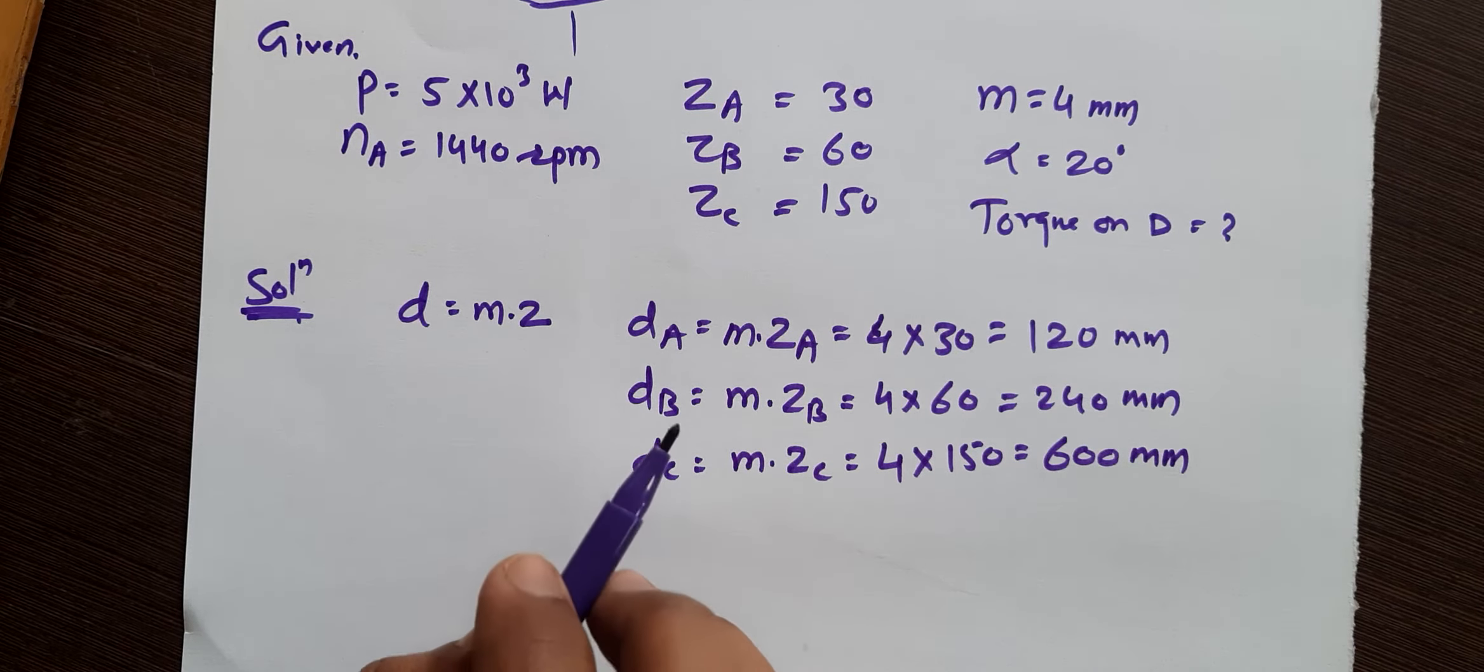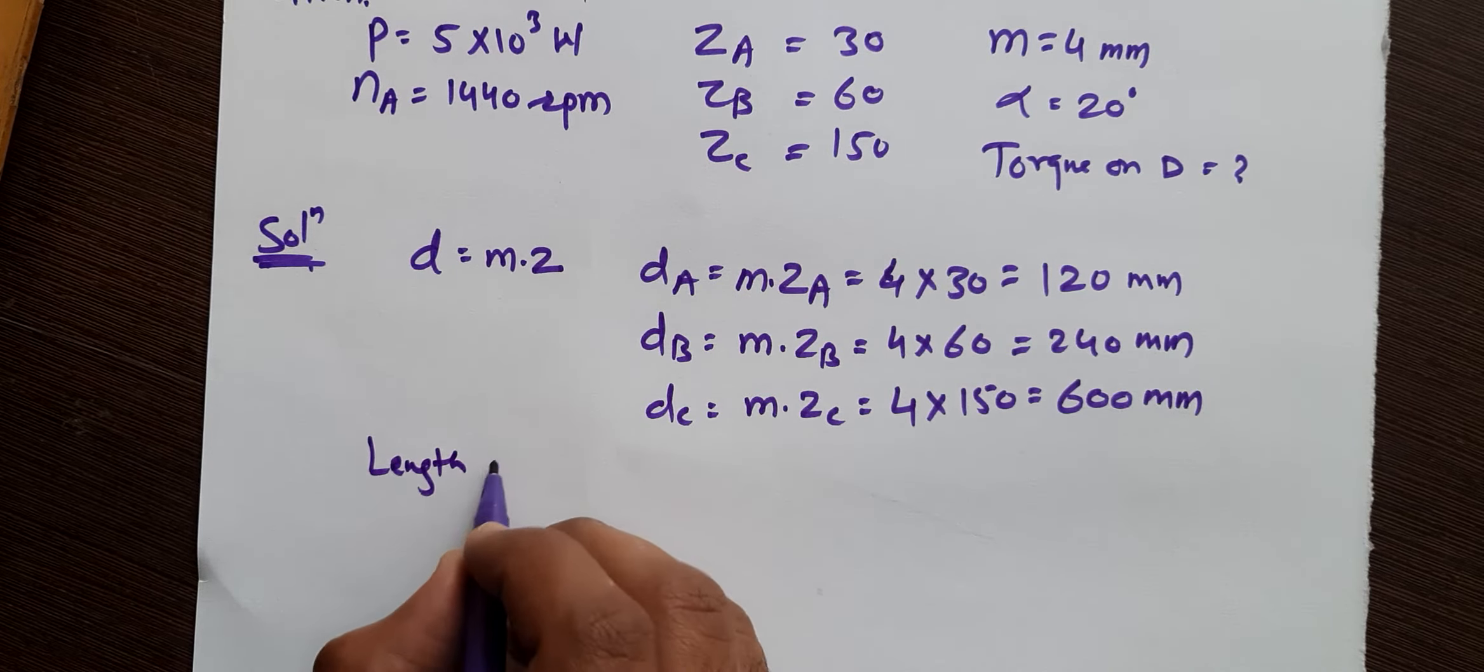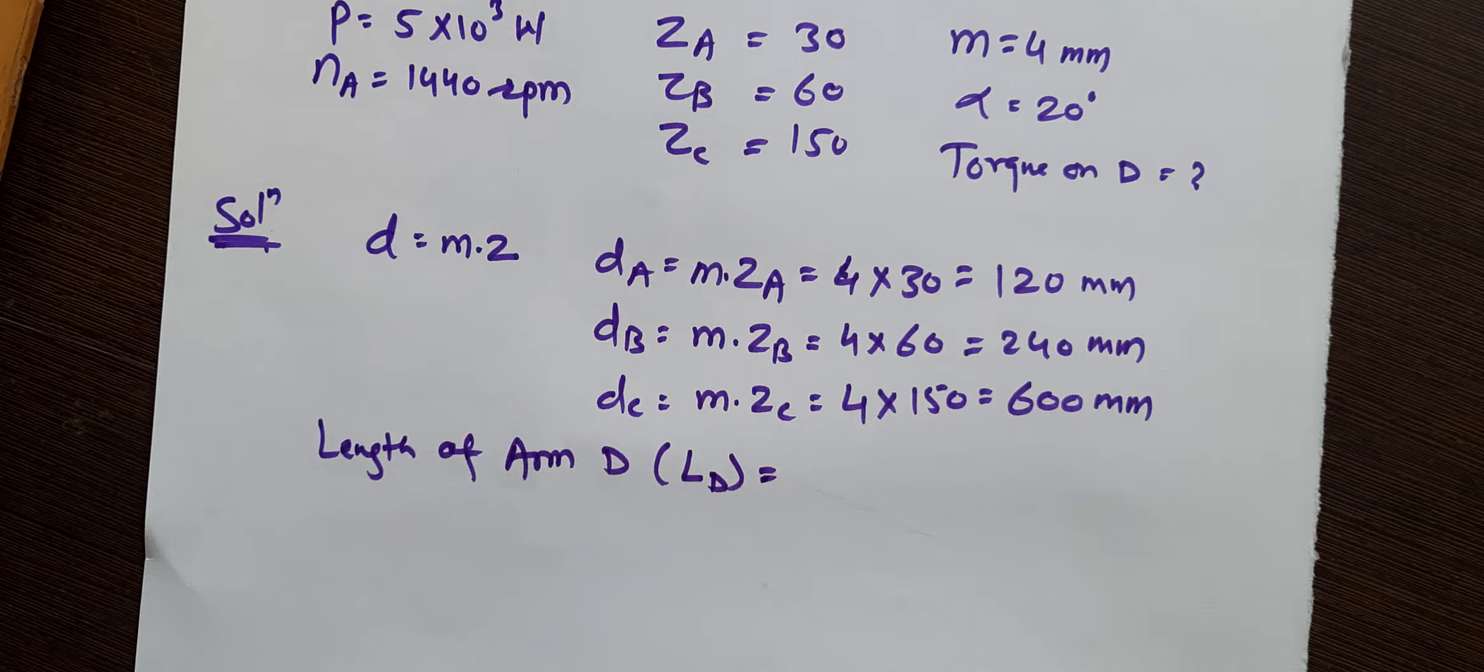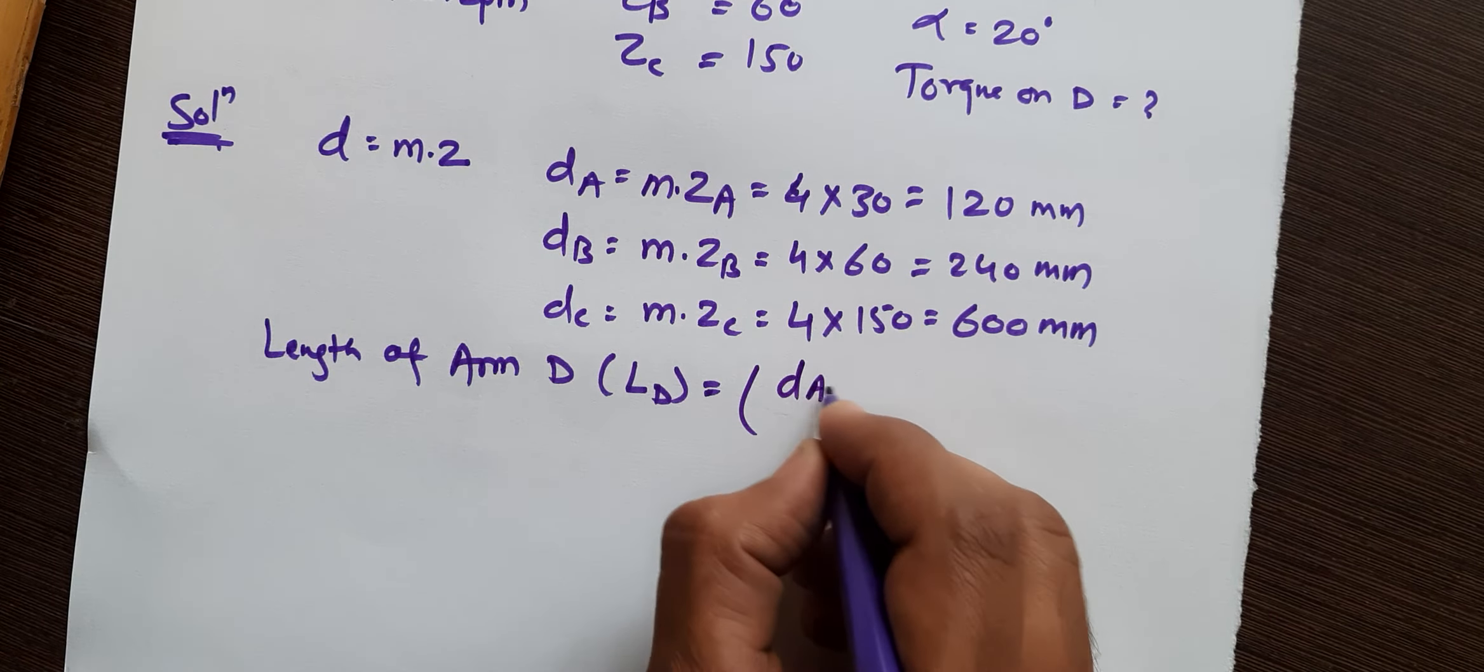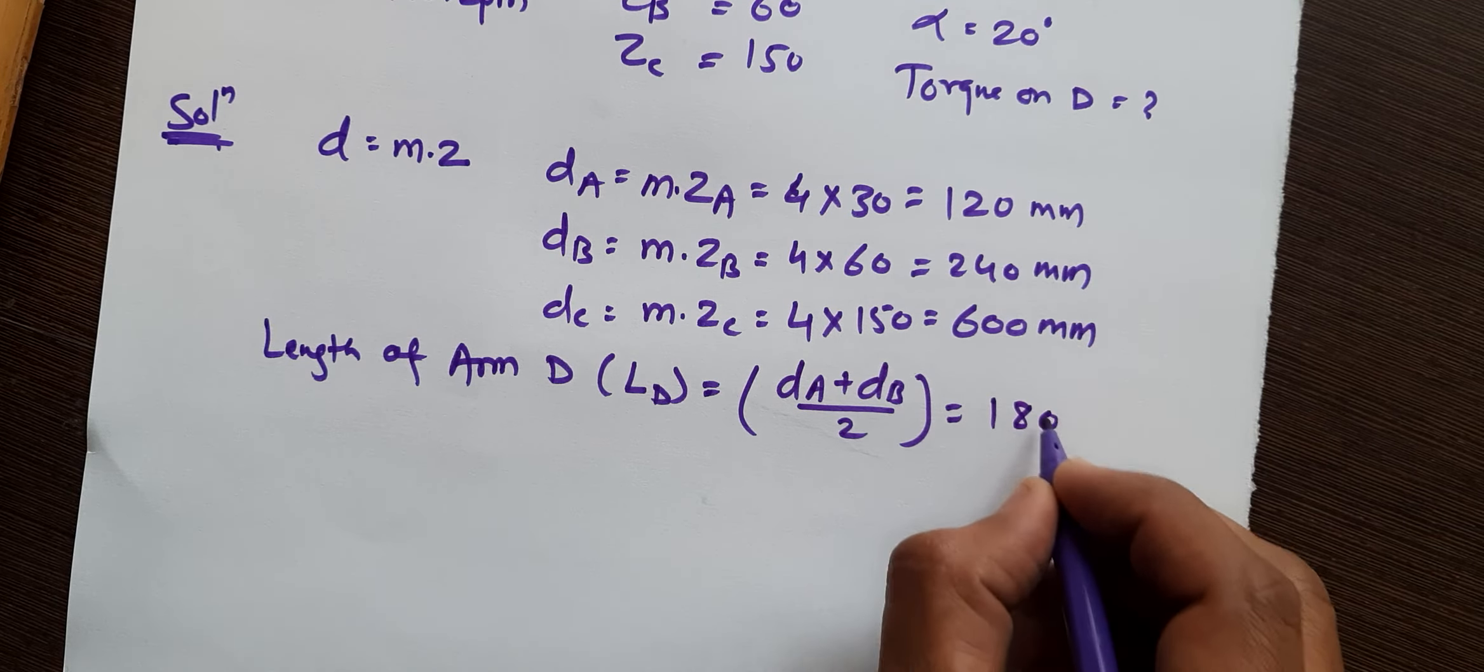Then after this we need to find the length of arm D. So length of arm D, let us call it LD. Now from the length of arm D you can easily calculate by adding the radius of gear B and radius of gear A. So radius of A plus radius of B will be length of arm D. So we will write here (DA + DB)/2. Now if you substitute DA, DB and divide by 2, you will get LD as 180 mm.